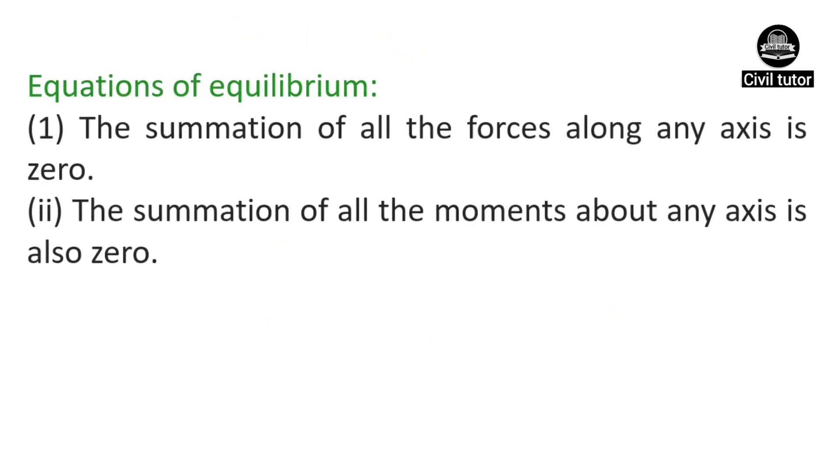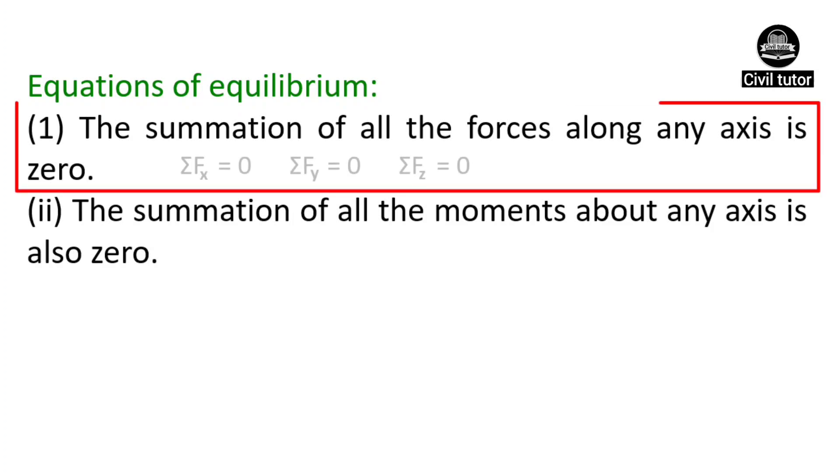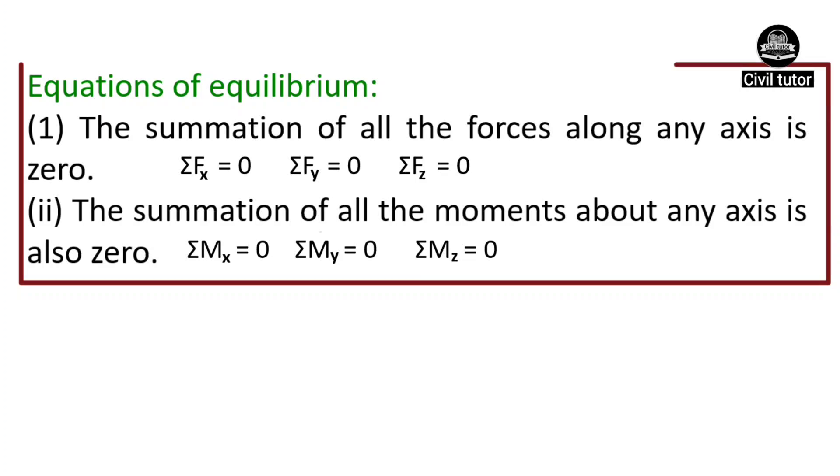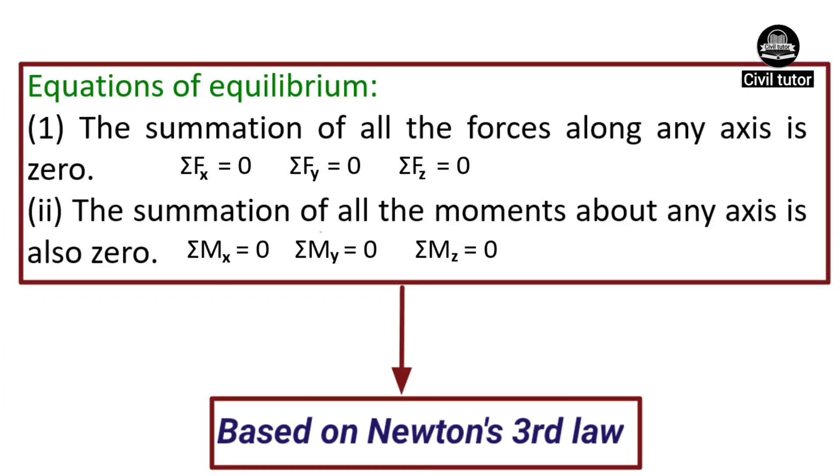The first equilibrium equation states that the summation of all the forces along any axis is zero. The second equation states that the summation of all the moments about any axis is also zero. These equations are based on Newton's third law.